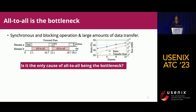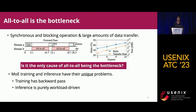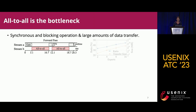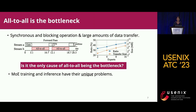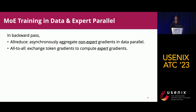We were wondering if this is the only cause of all-to-all being the performance bottleneck. To verify this, we evaluated MOE training and inference separately and found they have their own unique problems. For MOE training, it involves a backward path which does not exist in MOE inference, while inference is purely workload-driven. Therefore, there is no load balancing loss involved to constrain expert selection in inference.